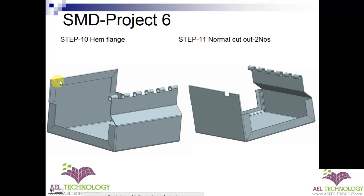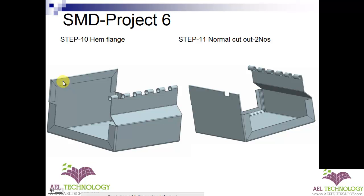After creating that close corner, we will create a 180 degree hem flange on this side. Next we will be creating a normal cutout. We have to create two of them because when we create a normal cutout, we draw the rectangle cutout profile on one plane, and when we cut on the opposite side, a little material is left out. We will create one more normal cutout to clean it out.